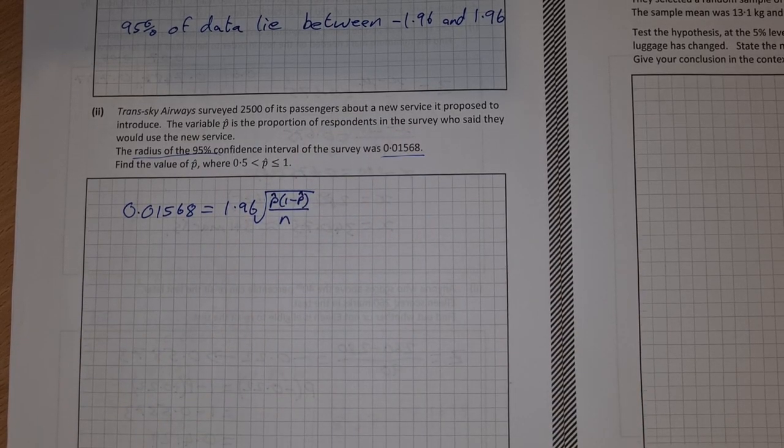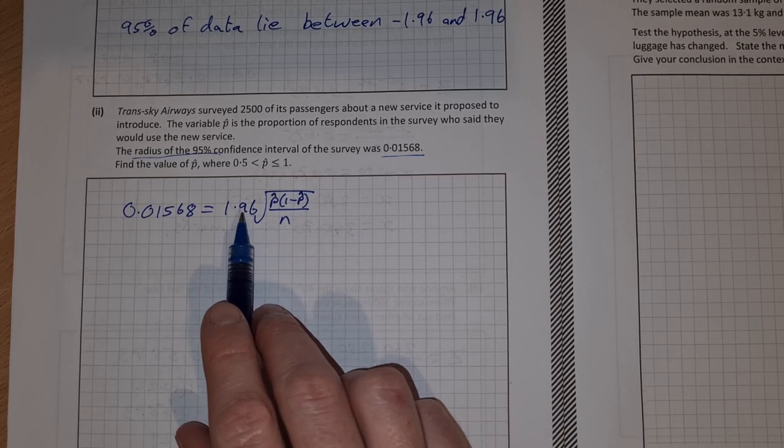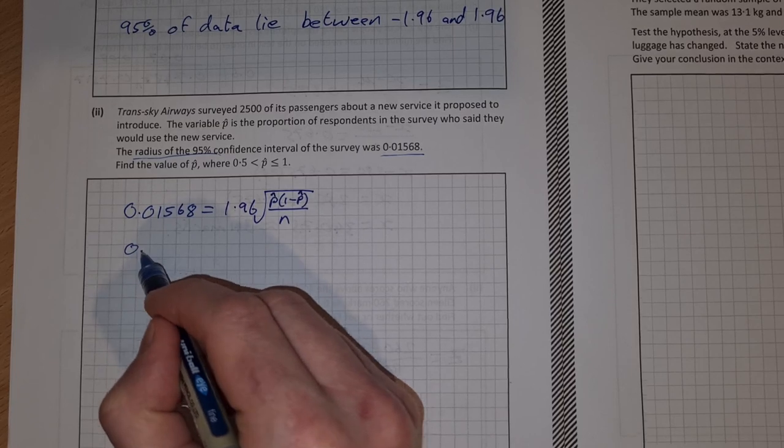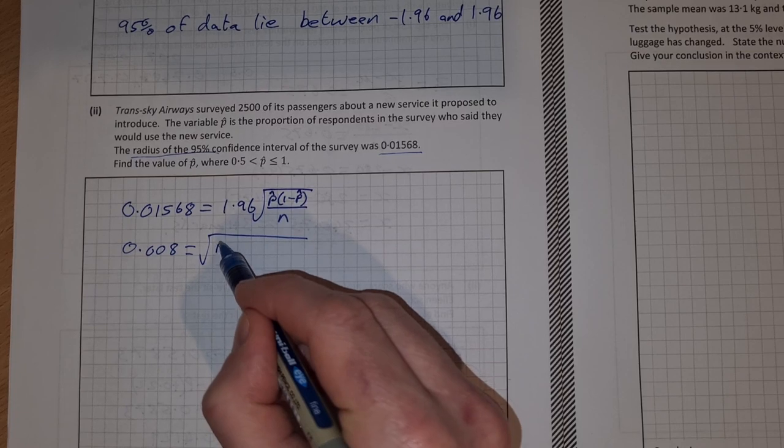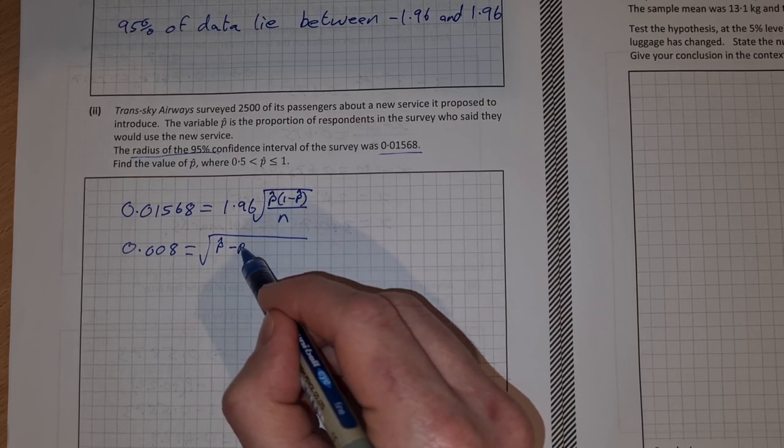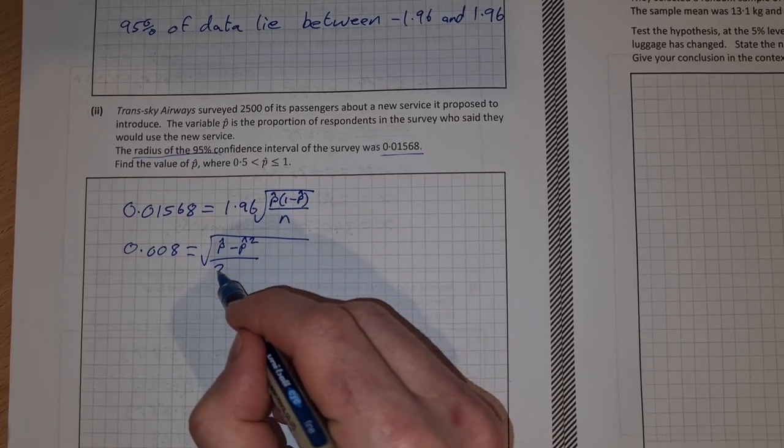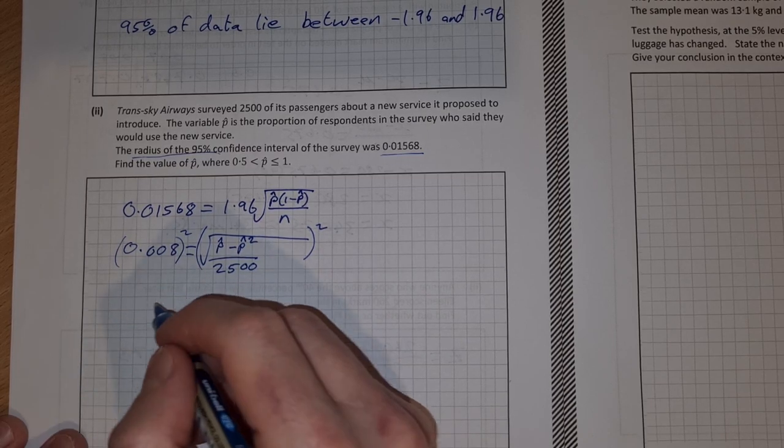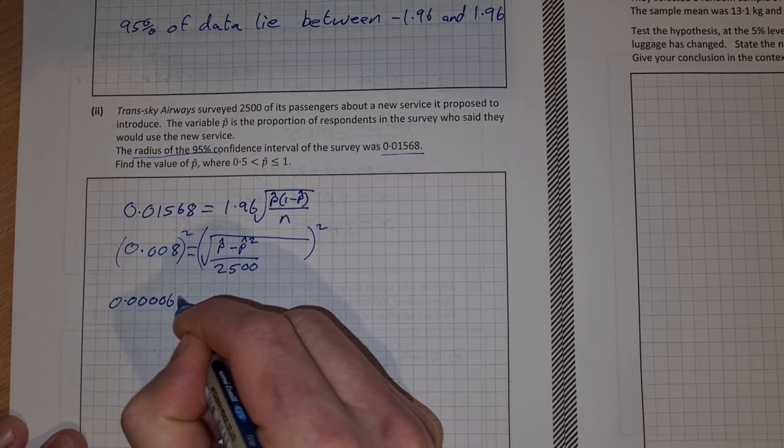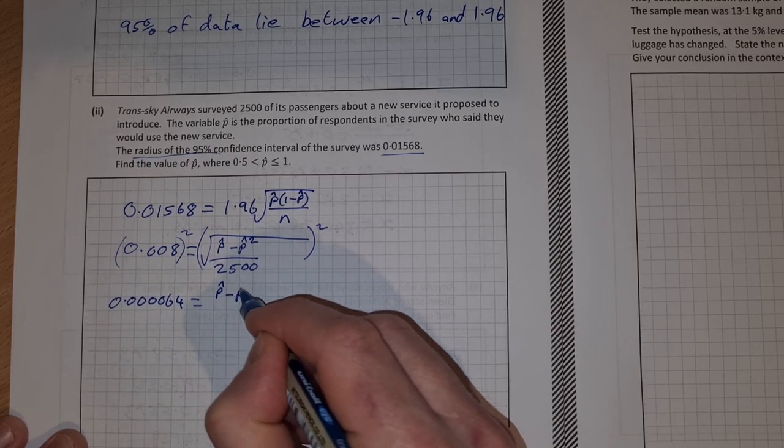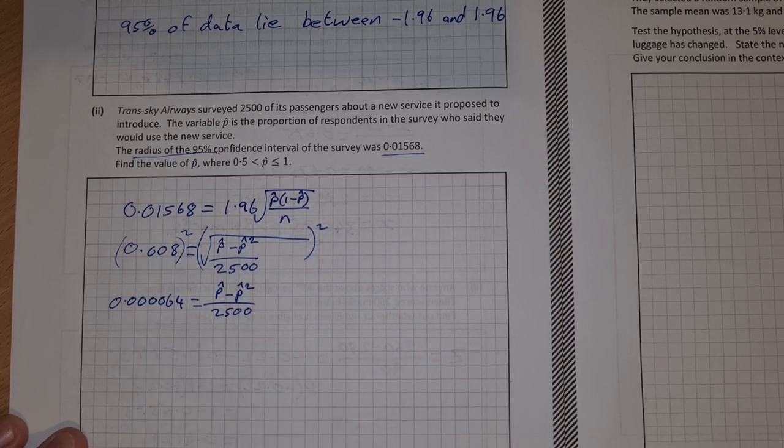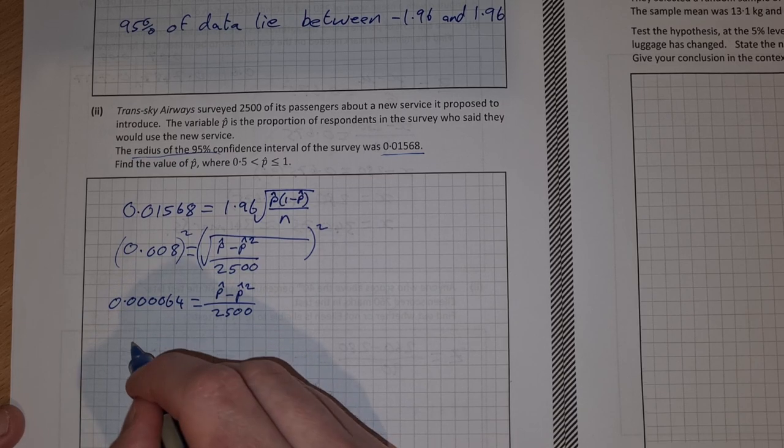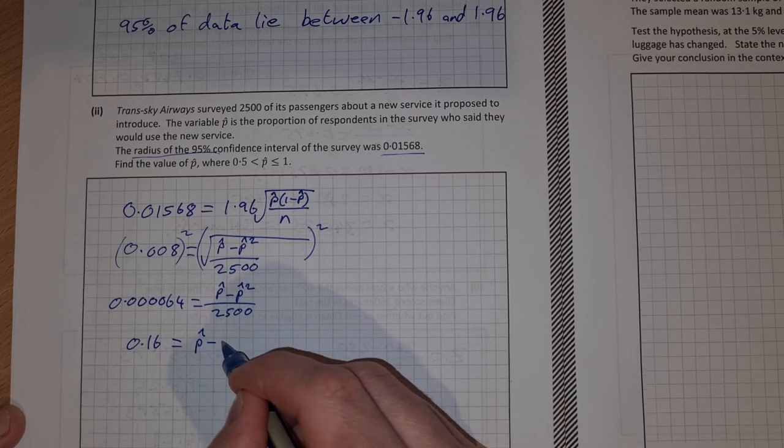I'll start by dividing both sides by 1.96 to get 0.008 on this side equals the square root of p-hat minus p-hat squared over n which is 2500. Now I can square both sides. 0.008 squared is 0.000064 equals p-hat minus p-hat squared over 2500. Then I can multiply across by 2500 to get rid of the fraction. 0.000064 times 2500 is 0.16, so that equals p-hat minus p-hat squared.